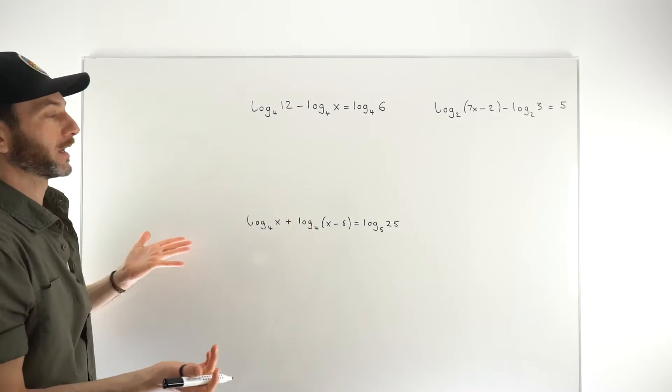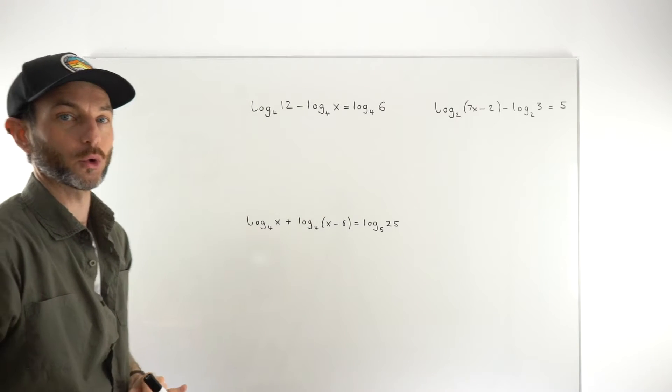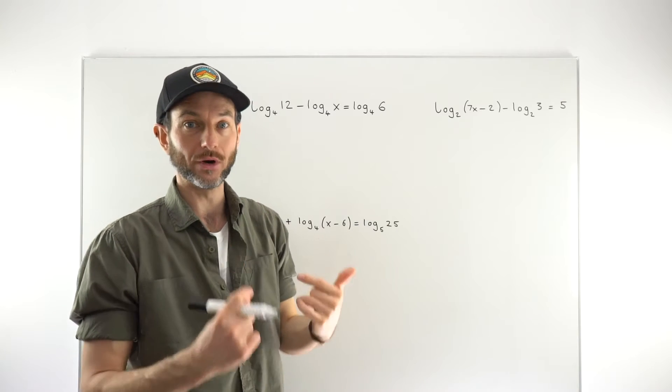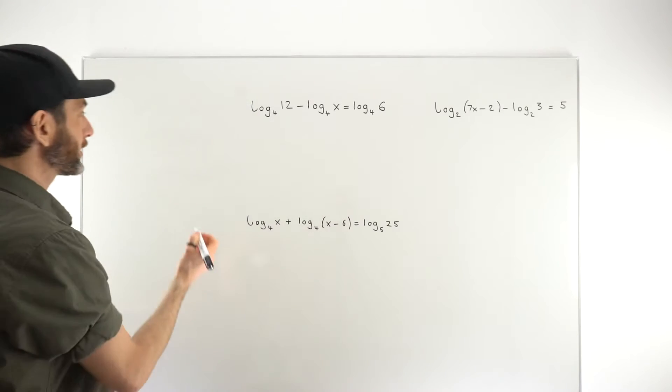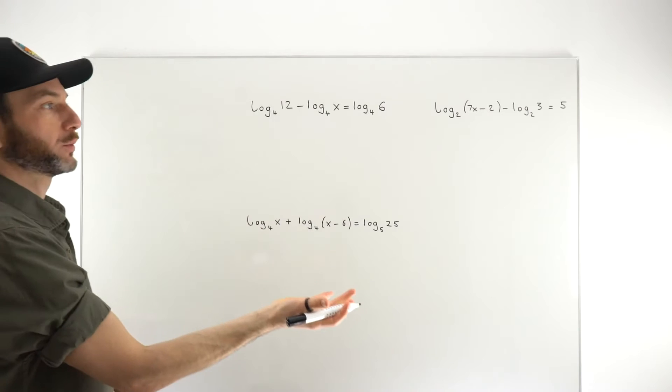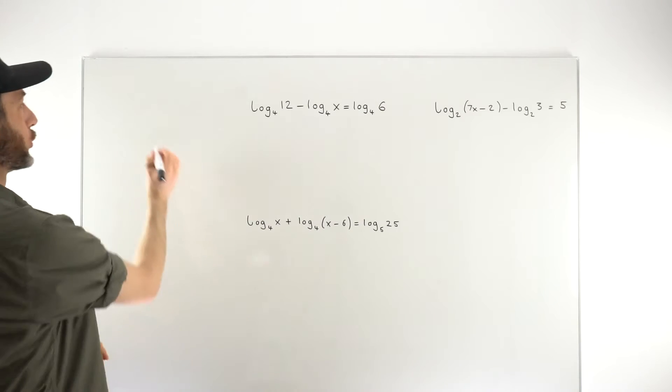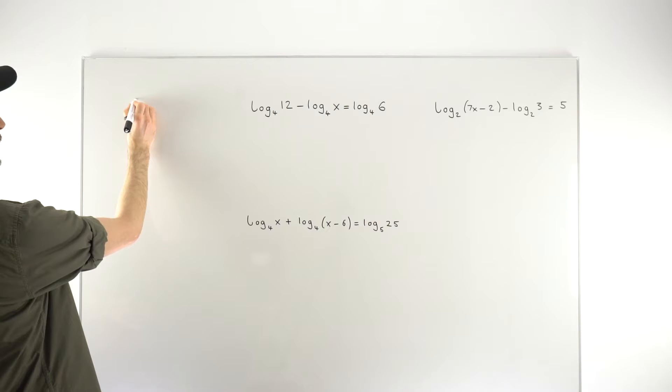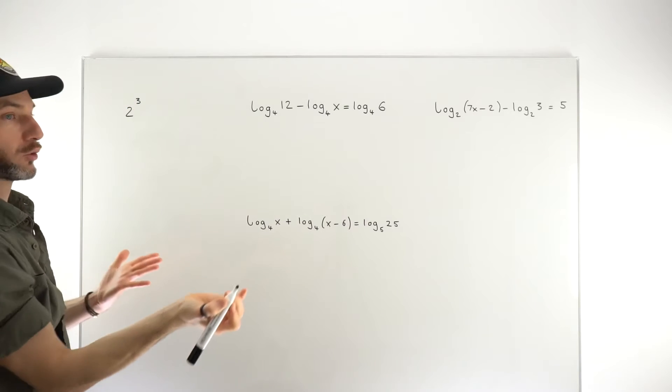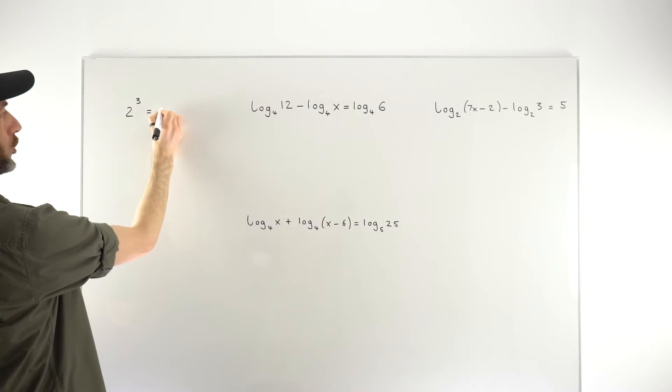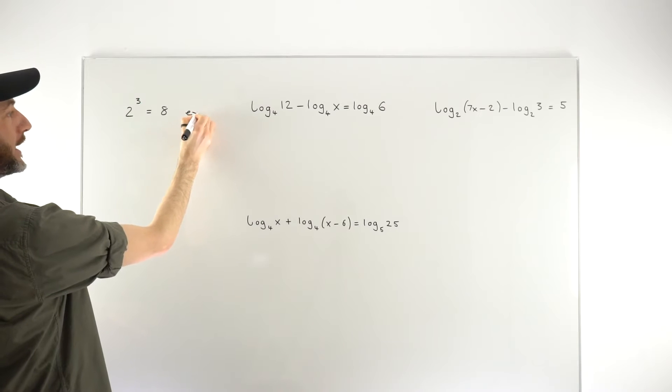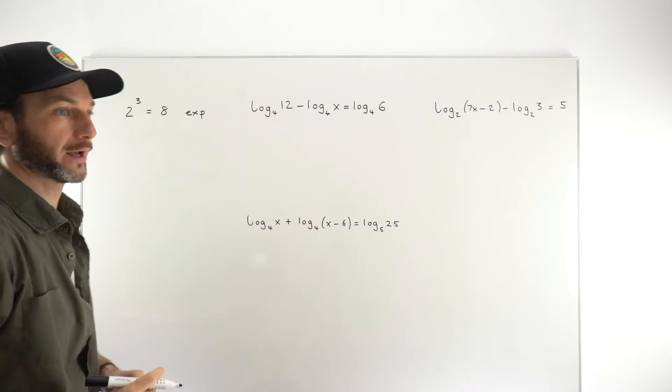First thing is just to think about what is a logarithm. A logarithm is the inverse of an exponential. Exponential comes from the word exponent which just means power. So an exponential term, something like 2 to the power of 3, is just something that's got a power. 2 to the power of 3, 2 cubed, that equals 8.